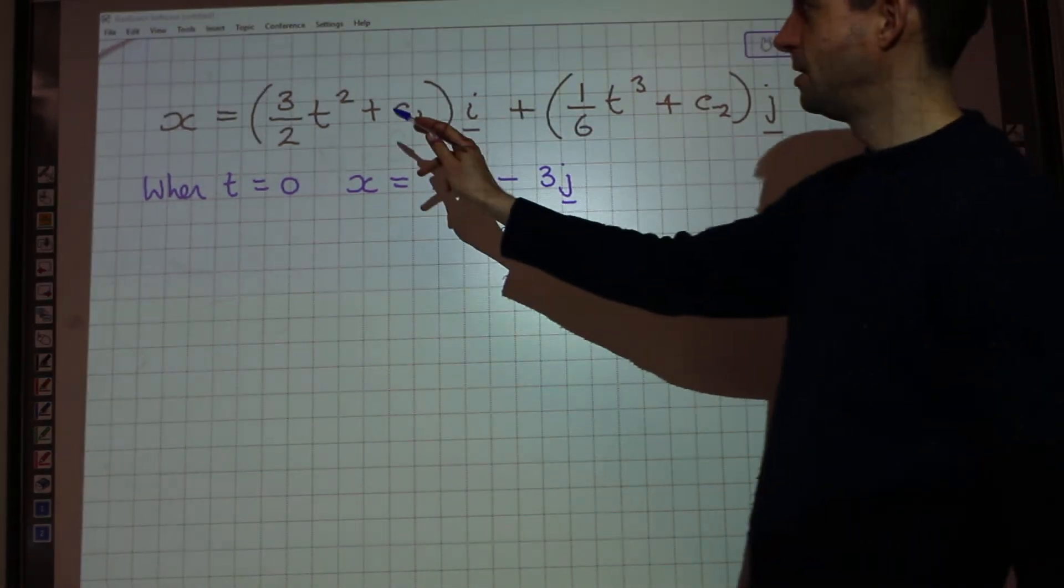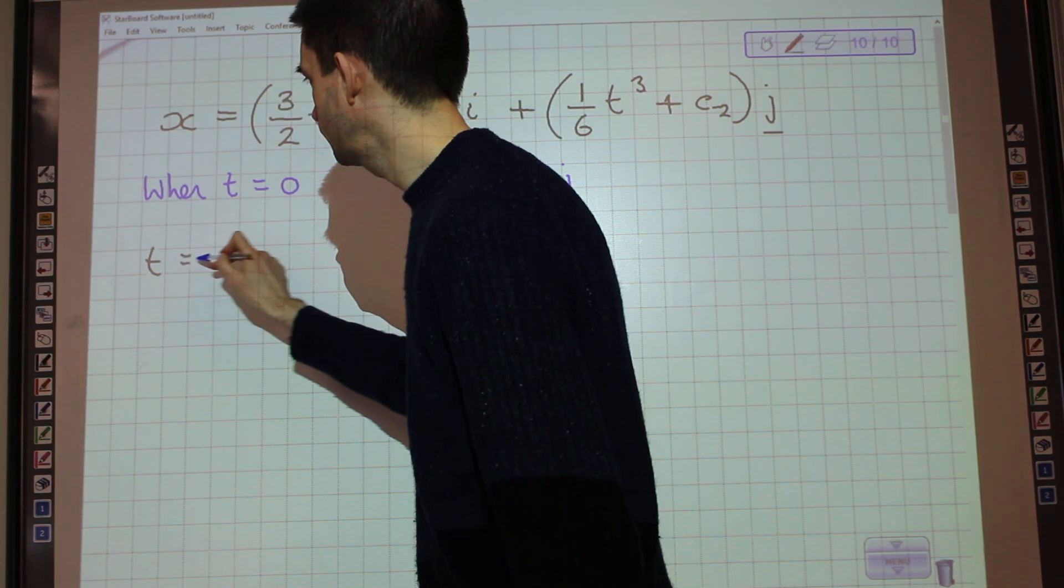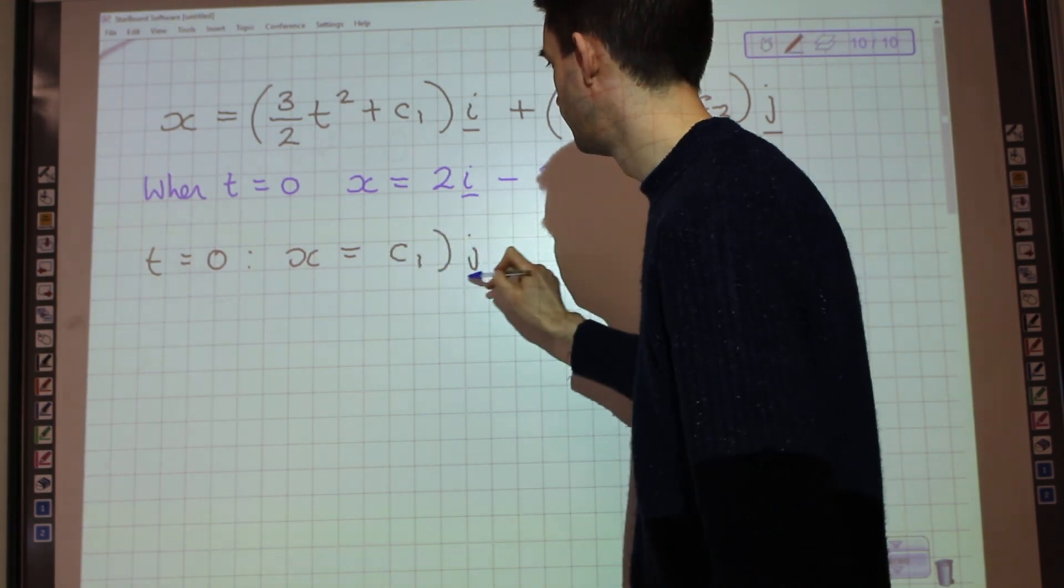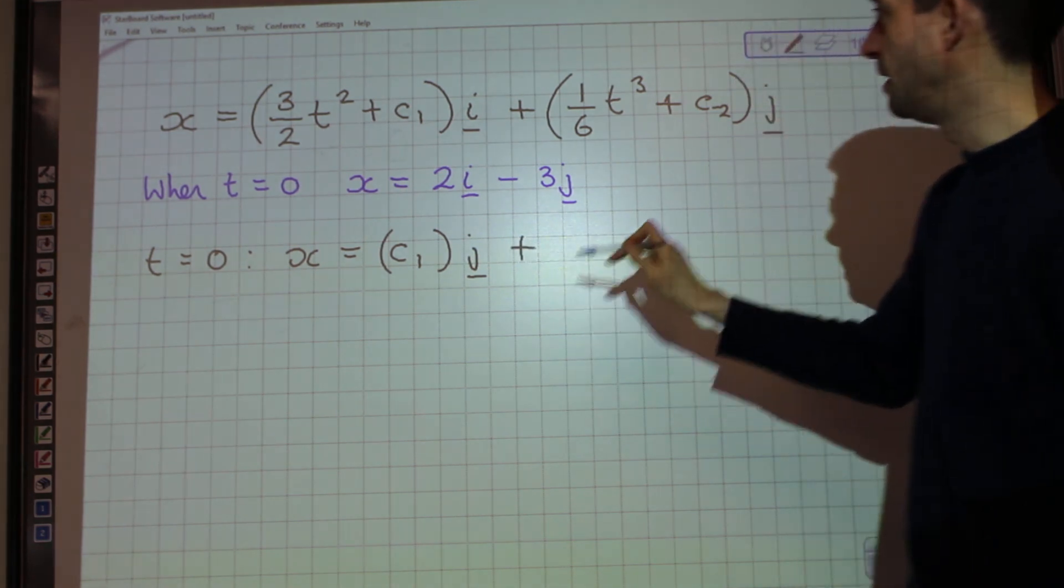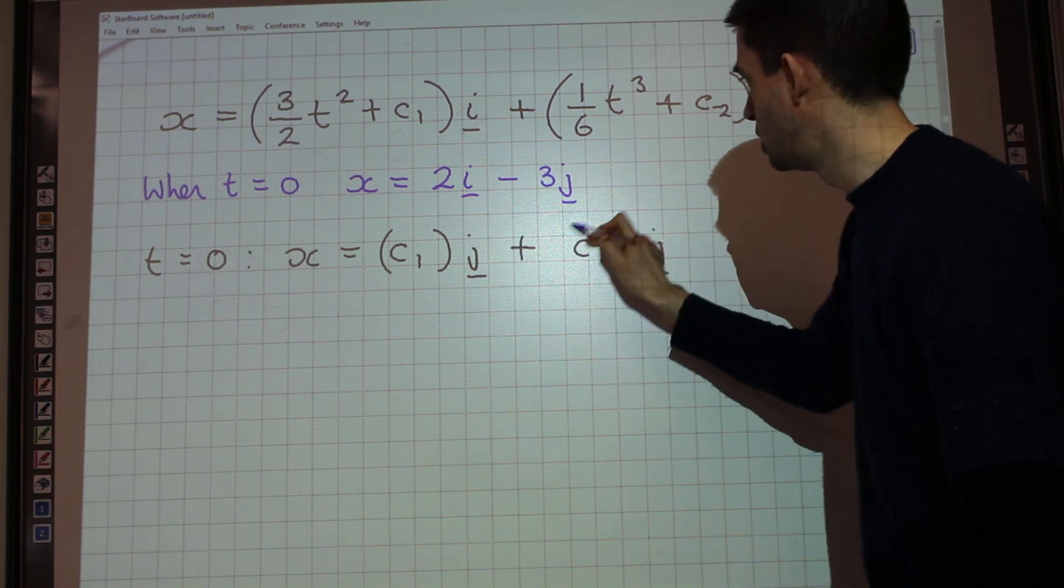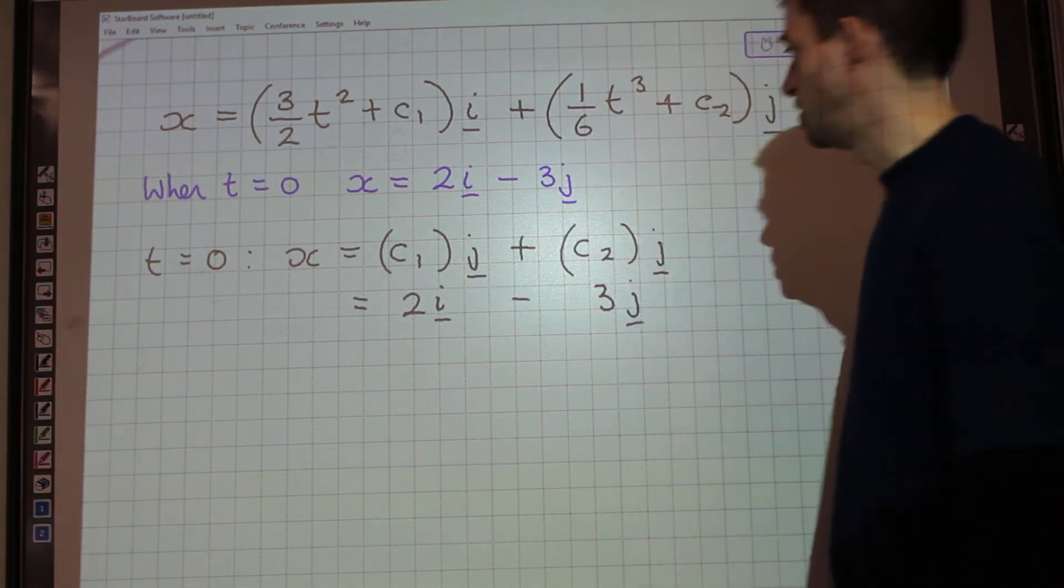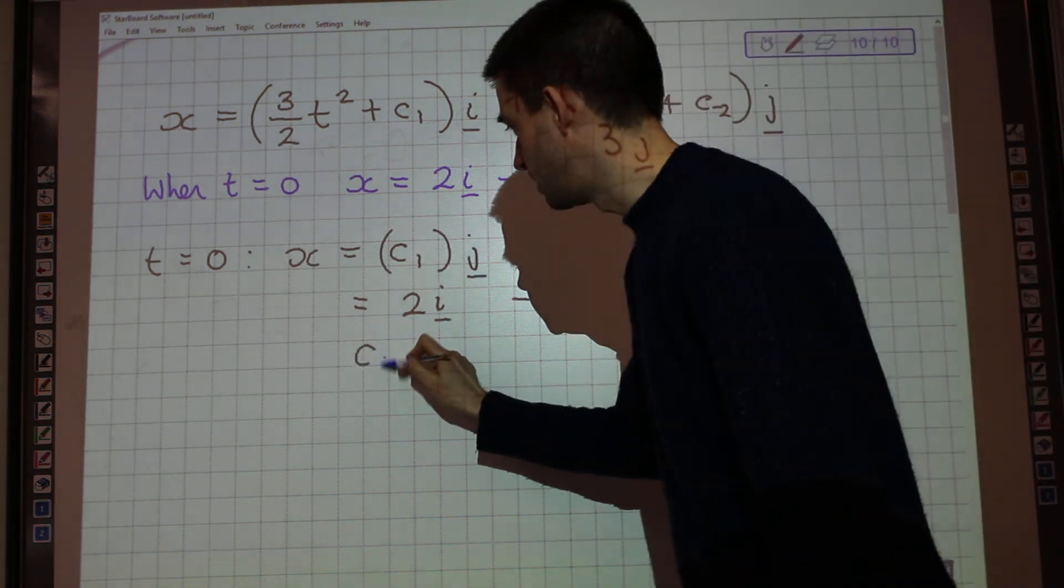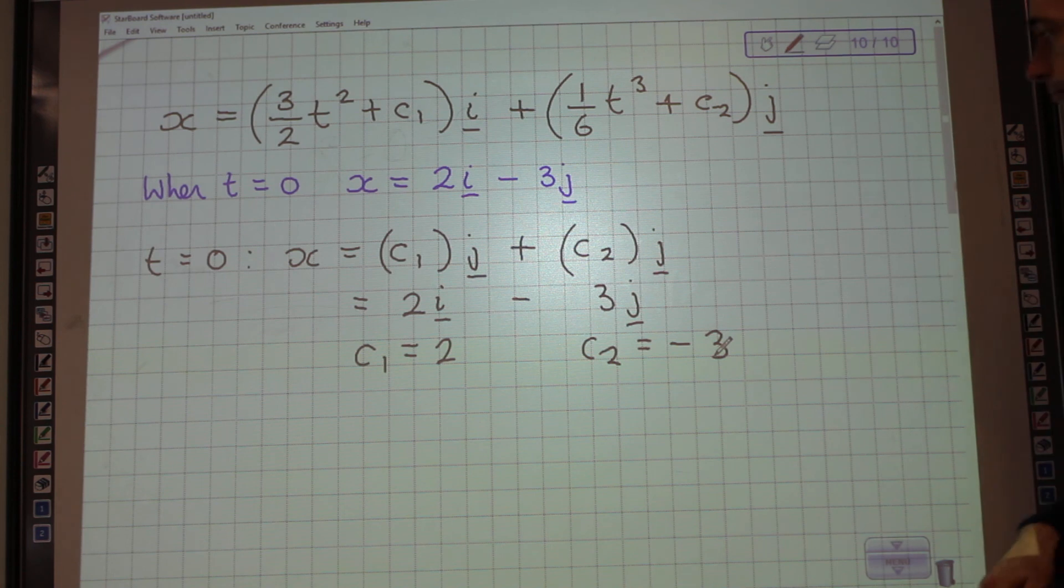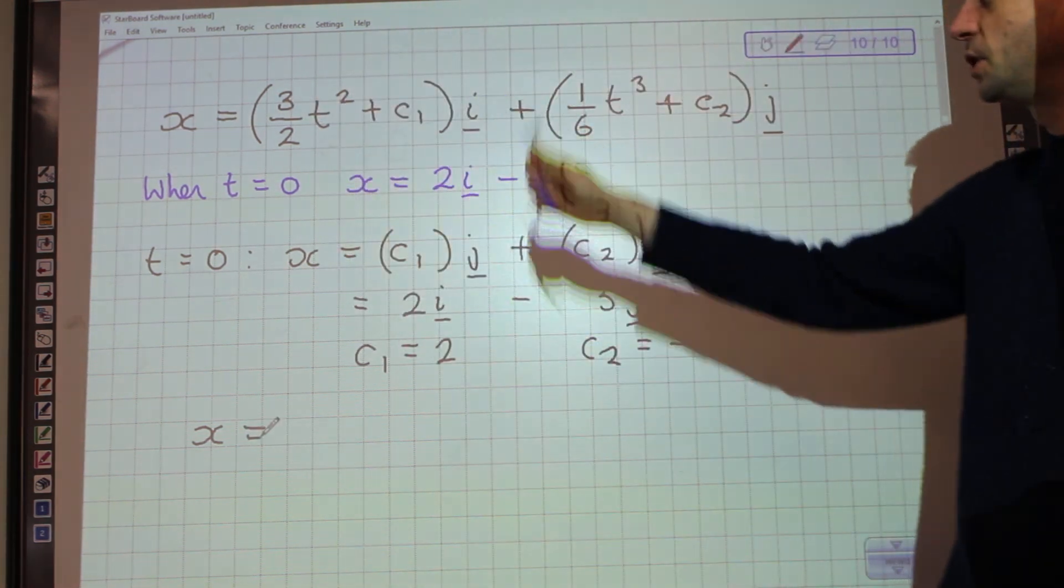So when t equals 0, x equals 2i minus 3j. So if I sub in t is 0 to this first bit here, if t is 0, then I would get x equals, well, nothing from that, so just c1i. And again, if t is 0, 1 sixth t cubed is 0, so plus c2j. And I know that that is equal to 2i minus 3j. And that tells me that c1 equals 2, and that c2 equals negative 3.